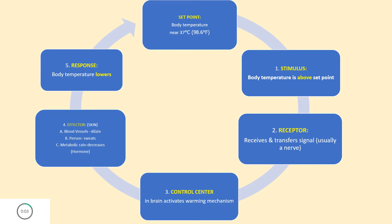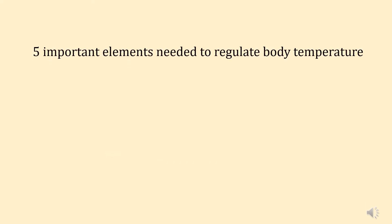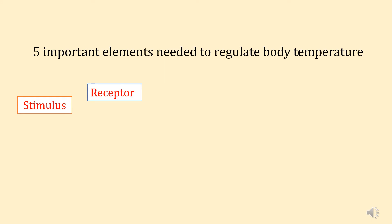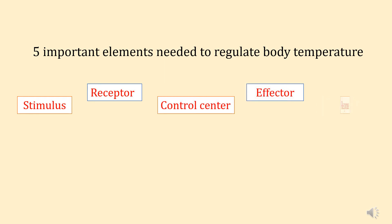Study and analyze the cycle flow chart. There are five important elements needed to regulate body temperature: stimulus, receptor, control center, effector, and response.